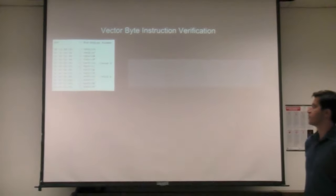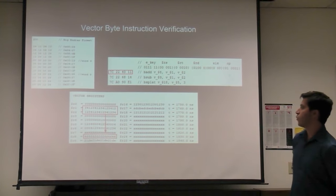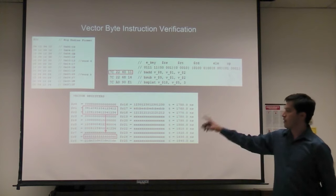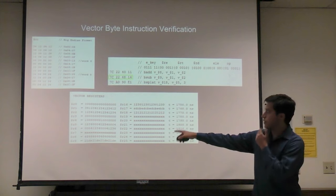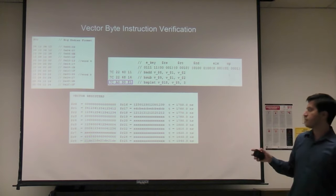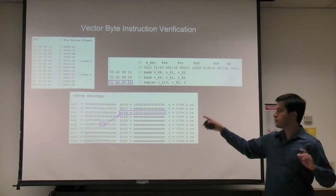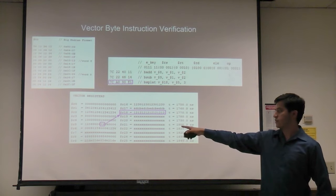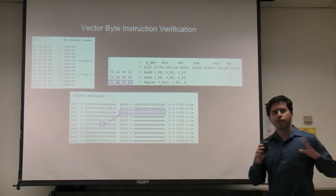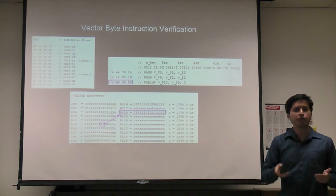For vector byte instruction verification: the first instruction is B-add, adding registers 1 and 2 — already loaded with data from memory. The byte values are added and stored in the result register. The second instruction subtracts registers 1 and 2 into register 9. The third instruction is B-splat on register 5, taking its third byte element — hexadecimal 12 — and replicating it throughout register 18. This is useful when you need a constant value to add or subtract: you replicate that byte throughout one register and perform an operation with another register.